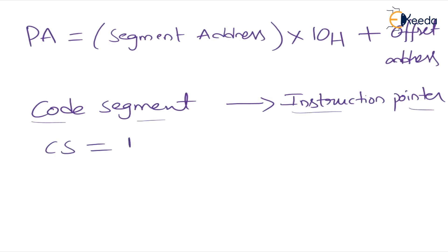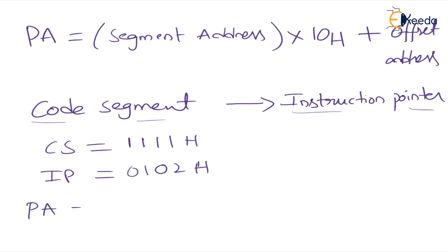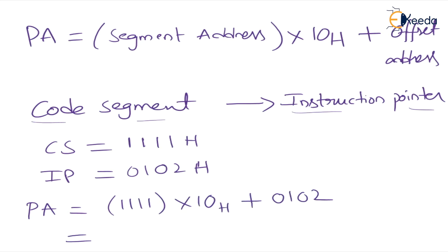Let us consider the code segment is 1111H and the instruction pointer is 0102H. Now calculate the physical address. Physical address equals segment address 1111H multiplied by 10H, plus offset address 0102H.